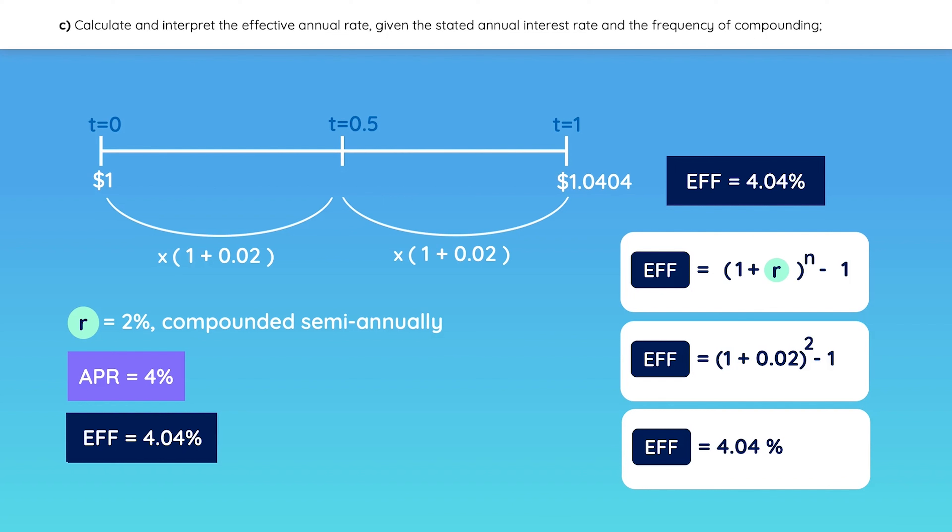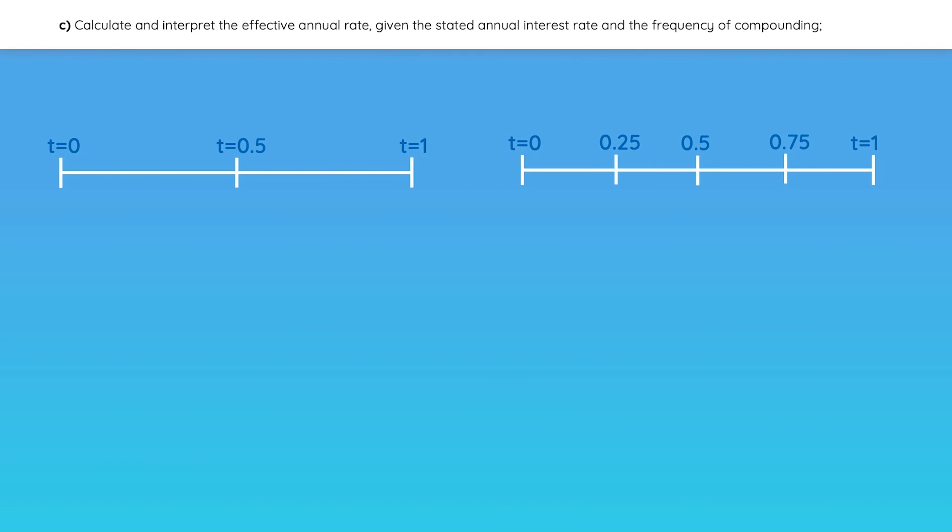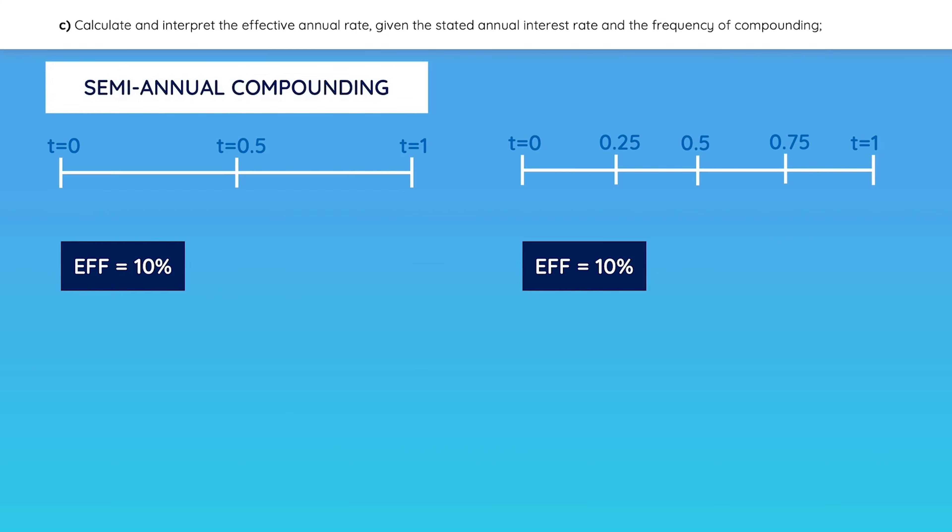Think you've got it? Let's try another example to reinforce the concept. Assume you have two securities with the same effective rate of 10%. The first security has semi-annual compounding, while the second has quarterly compounding. What are their annual stated rates and their periodic rates? Pause the video if you want to solve it on your own, and then check your work.